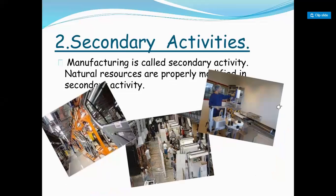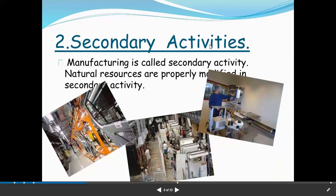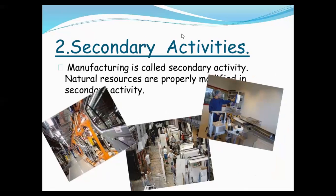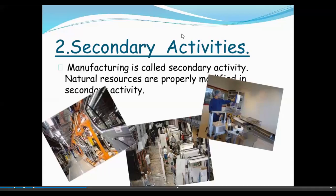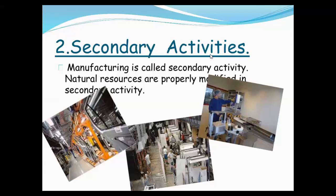Next is Secondary Activities. In simple words, these are activities which convert raw material into useful goods. That is called Secondary Activities. In these activities, manufacturing processes take place, and all industries are covered in this activity because we are converting raw materials into finished goods.